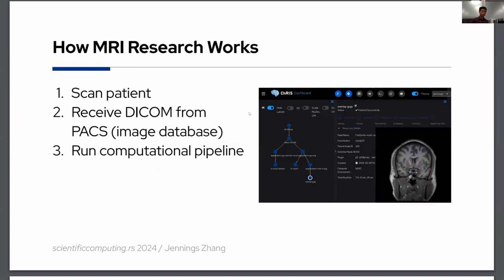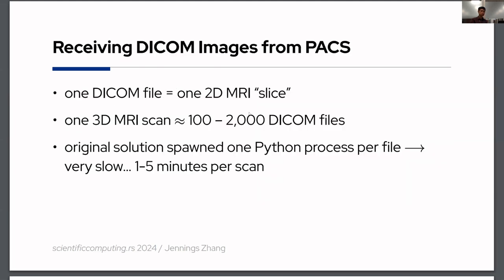How MRI research works basically anywhere in the world is: you start with a scan of the patient, and then you always end up with DICOM data on what's known as a PACS server. PACS is just a fancy word for an image database. We want to obtain that DICOM data from the PACS and run some kind of computational pipeline on it — for example, image segmentation. In the realm of neuroscience we're interested in segmentation of brain regions, extracting surfaces, and quantifying the size of certain parts of the brain. Receiving DICOM from PACS isn't a trivial issue, and it suffers from problems stemming from the sheer age of the DICOM protocol.